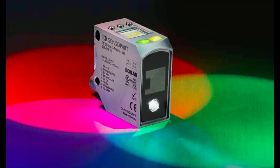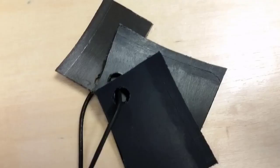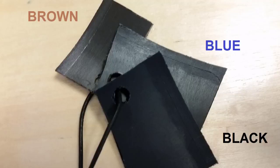In this next example we have three dark plastic parts that look similar. They're actually brown, blue, and black.